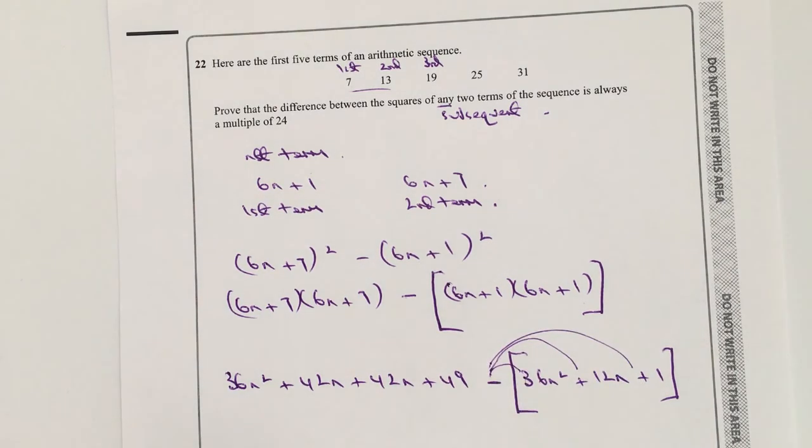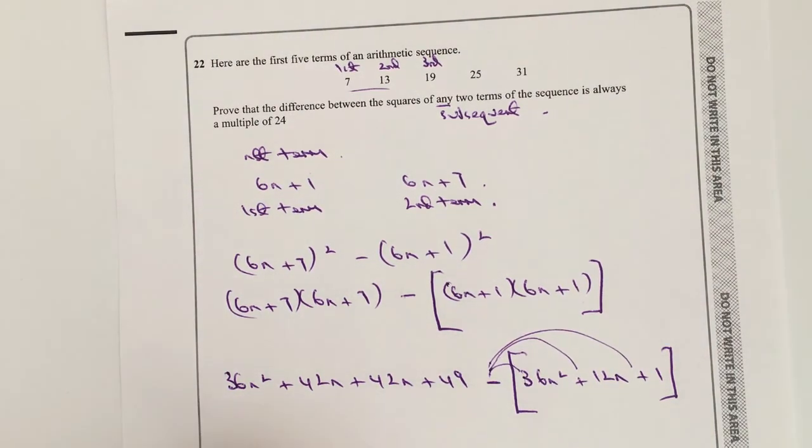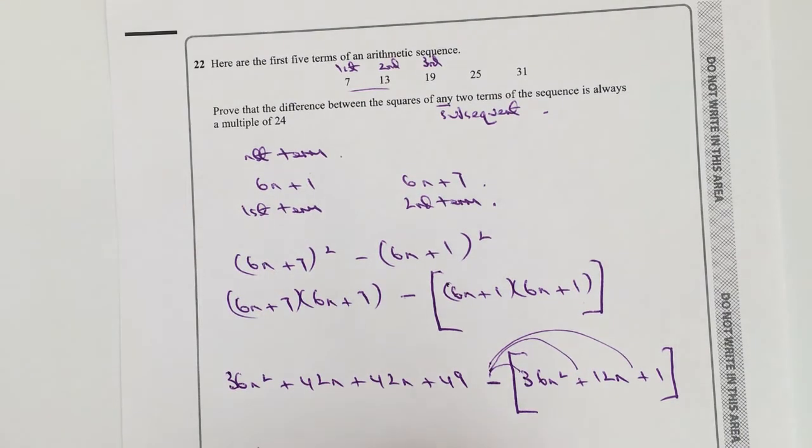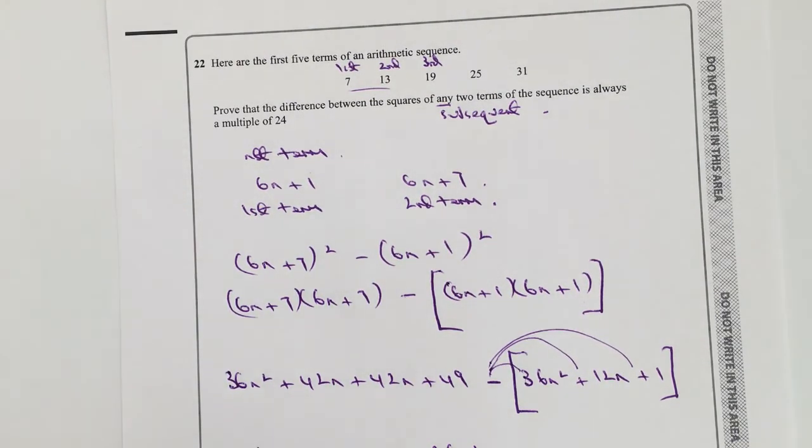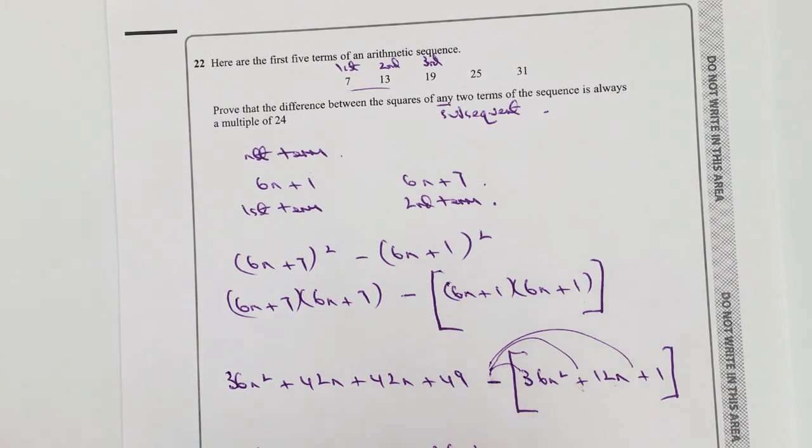Okay, so let's then remove these brackets, and then this minus sign will have an effect upon each of the terms in here. Okay, so I've got 36n squared, and that's going to be plus 84n plus 49, and that's minus 36n squared, which is pretty good because those are going to cancel themselves out. Minus a plus is going to be a minus 12n, and then minus a plus is going to be minus 1.